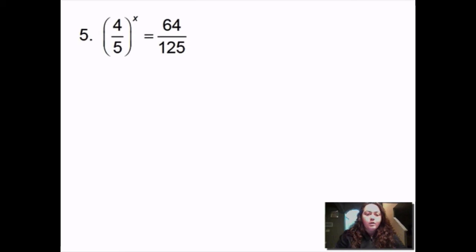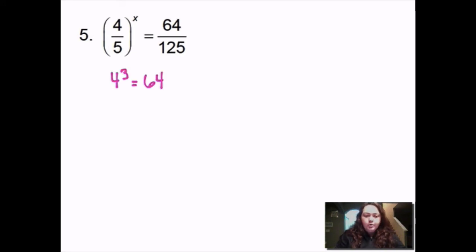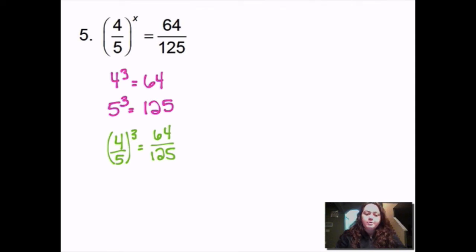This one I have 4/5 to the x equals 64 over 125. There's nothing outside to get rid of — I can't get rid of that fraction because the whole piece is the fraction being raised to the power. So I have to know: 4 to the what gives me 64, and 5 to the what gives me 125, hoping they're the same number. Well, 4 to the 3rd gives me 64 and 5 to the 3rd gives me 125. So 4/5 to the 3rd equals 64 over 125, therefore x equals 3.